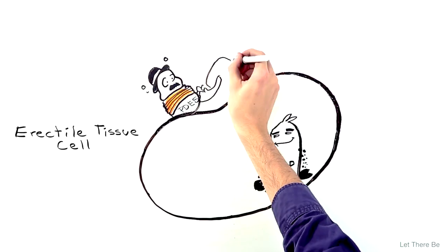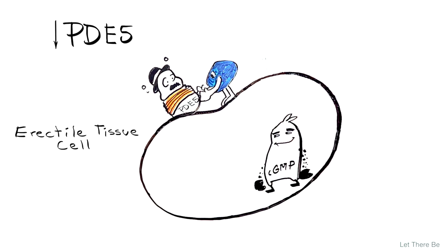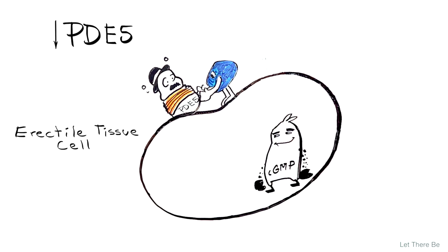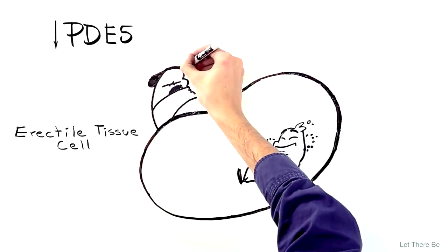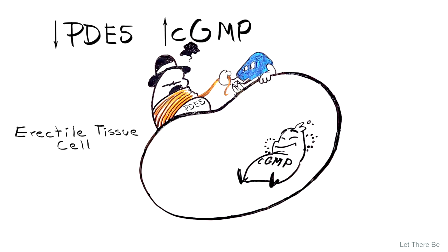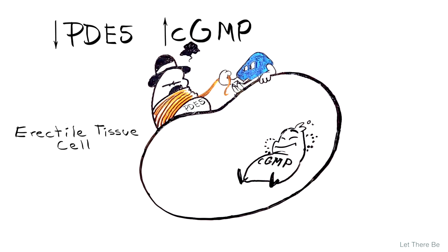Viagra is a selective inhibitor of PDE5 and therefore promotes increased levels of nitric oxide and cyclic GMP. With heightened levels of cyclic GMP, smooth muscle relaxation is enhanced and thus the ability to achieve and maintain an erection.